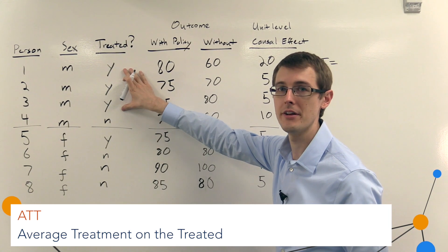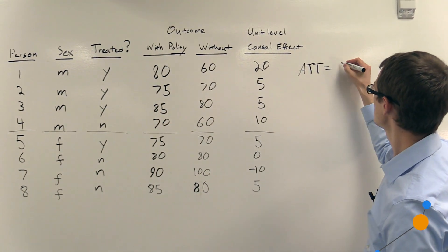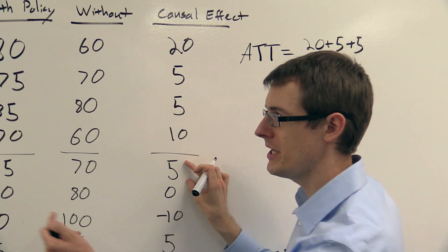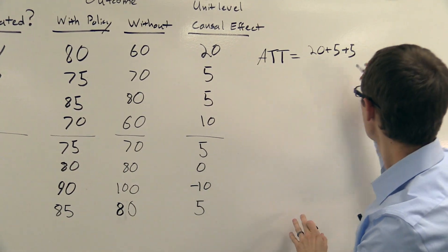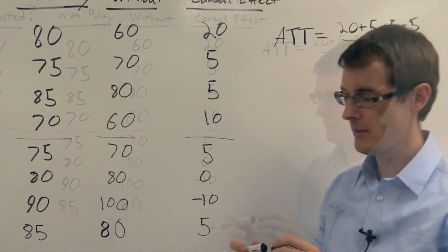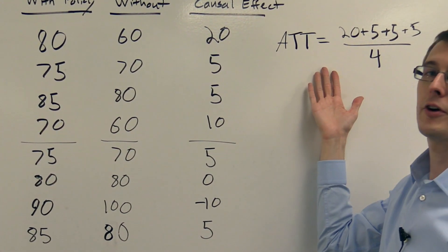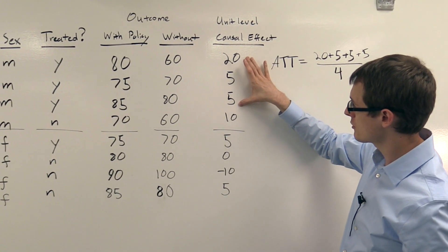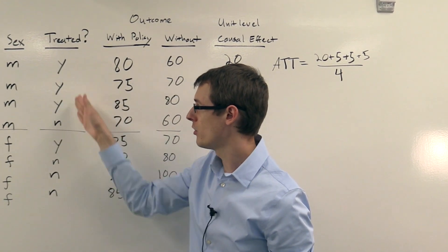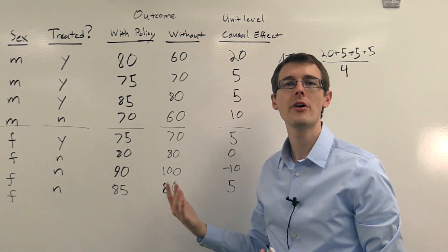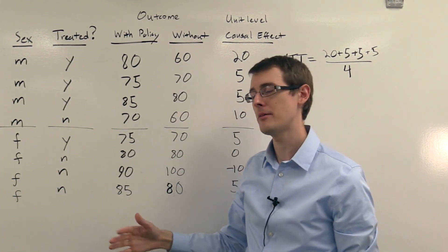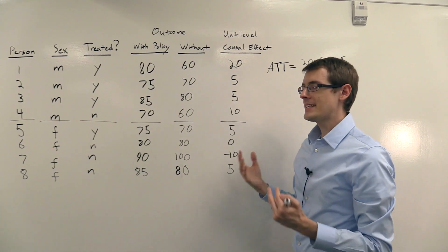So this person, this person, this person, that's 20 plus 5 plus 5. And then this person here, this one female who was treated, plus 5, divided by 4 people. So that's the average treatment on the treated. It's the average of these three people and this person. Where we're just thinking of this variable telling us whether someone was treated or not, as just another variable in our data set, just like sex is here, male or female. So that's average treatment on the treated.